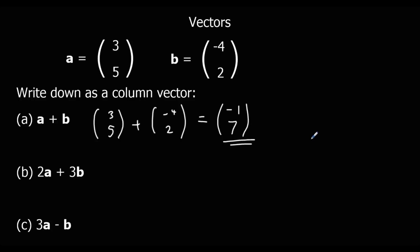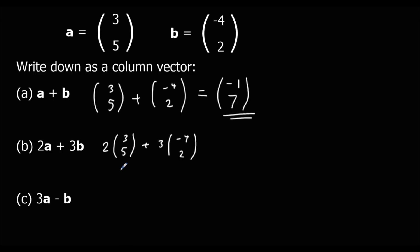Part b says 2a, so we're going to do a twice, and then 3b — we're going to do b three times. Two of the three, five vectors — we can just double it — so that gives six, ten. Two times three is six, two times five is ten. Three of the minus four, two vectors: three times minus four is minus twelve, and three times two is six, giving minus twelve, six.